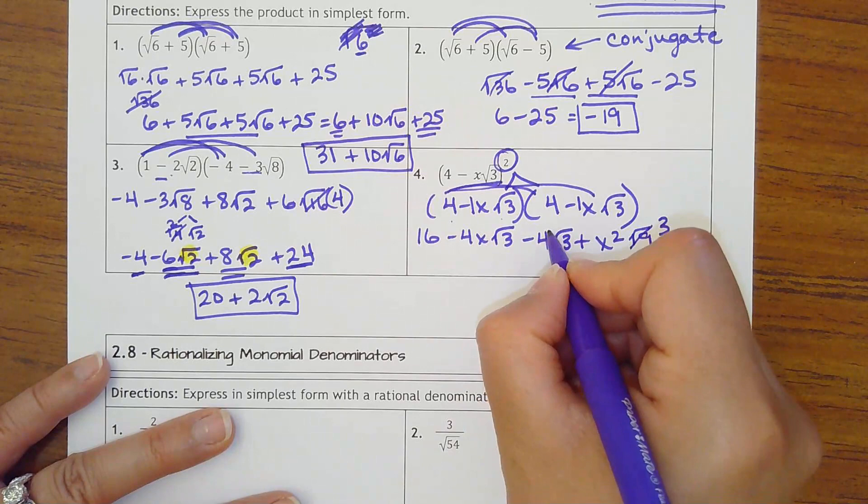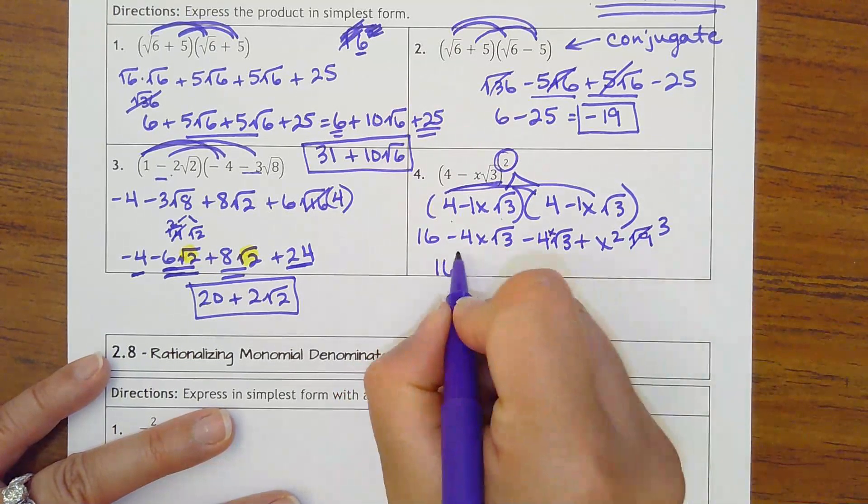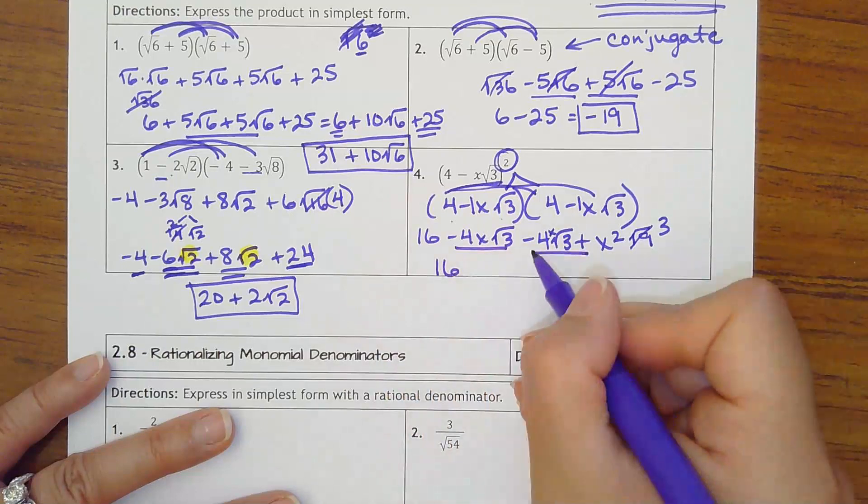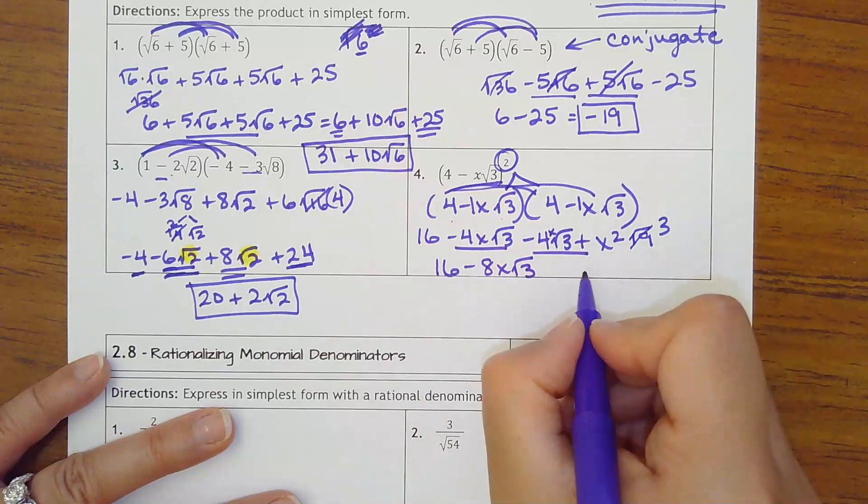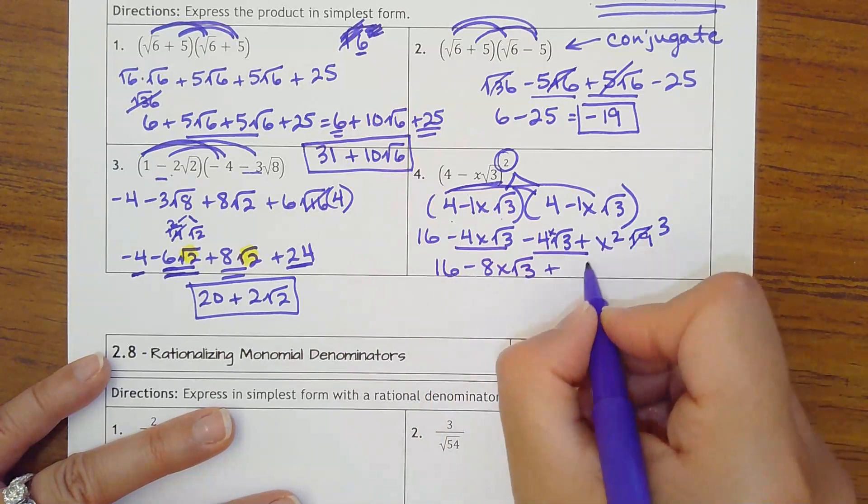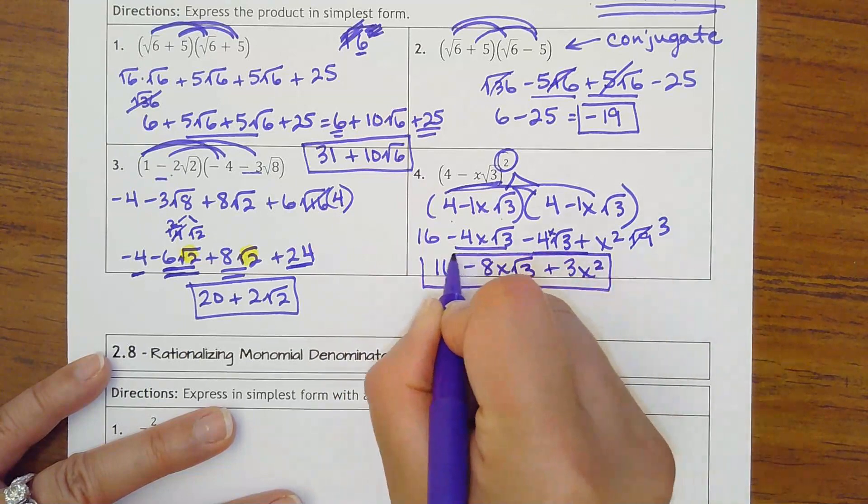I forgot the x here. Okay. So it doesn't really matter the order you put this together. We've got 16. Put these terms together. So it's negative 8x square roots of 3 plus this was a 3x squared. No more like terms. So keep it just like that.